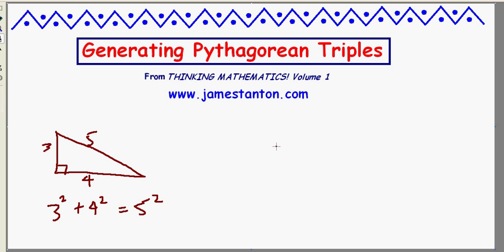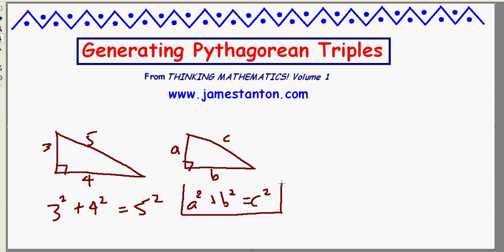So a Pythagorean triple is any set of whole numbers that has this property, where a squared plus b squared equals c squared. They're actually hard to find.